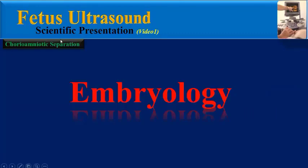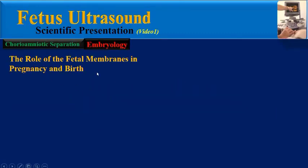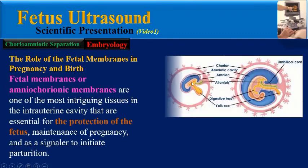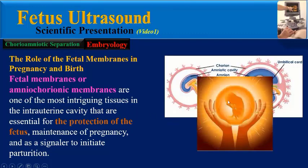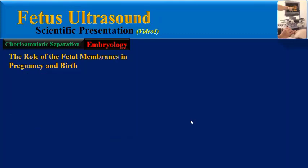The first section is about embryology: what is the role of the fetal membranes in pregnancy and birth? Fetal membranes, or chorioamniotic membranes, are one of the most intriguing tissues in the intrauterine cavity. They are essential for protection of the fetus, maintenance of pregnancy, and as a signaler to initiate parturition.